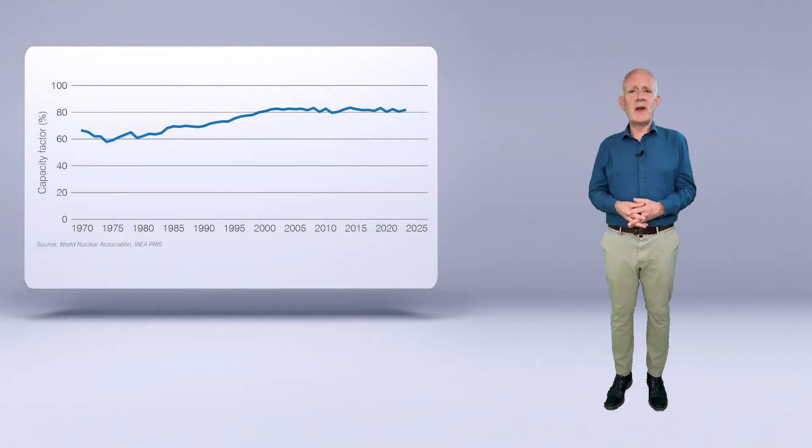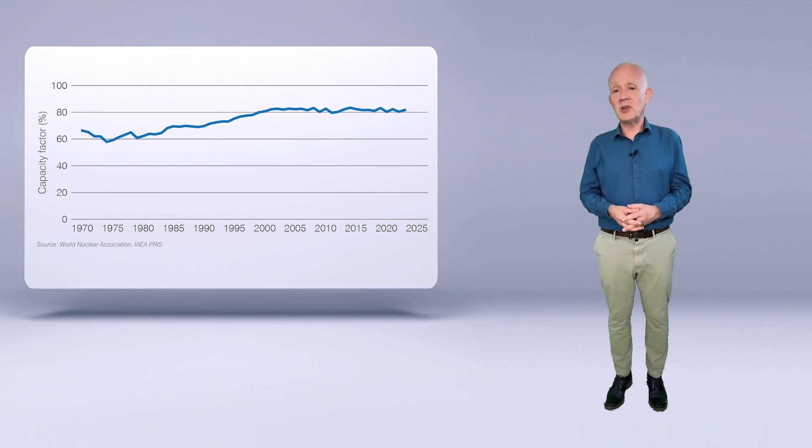Globally, nuclear reactors have a consistently high level of performance in terms of capacity factor. Capacity factor compares the actual output of a reactor to its theoretical maximum output, if operated continuously at 100% of its rated power. In 2023, the global average capacity factor for reactors generating electricity was 81.5%, up from 80.4% in 2022.